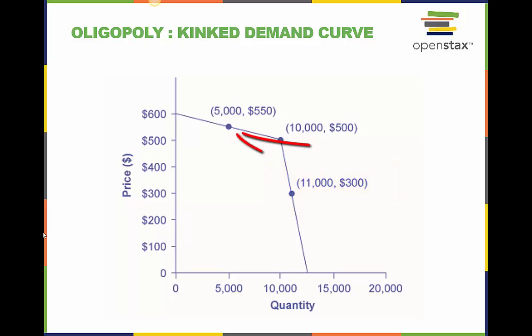On the other side, if the oligopoly attempts to raise its price, other firms will not do so. So if the firm raises its price to 550, its sales decline sharply to 5,000. Thus, the members of a cartel can discipline each other to stick to the pre-agreed levels of quantity and price through a strategy of matching all price cuts, but not matching any price increases.